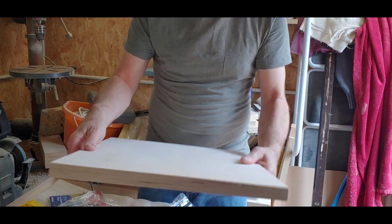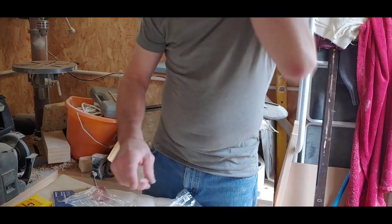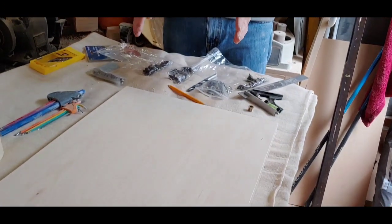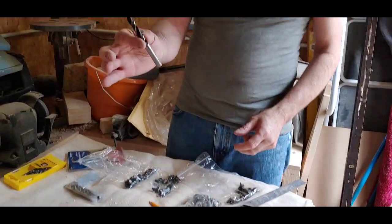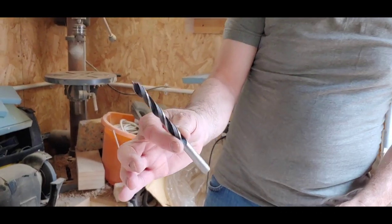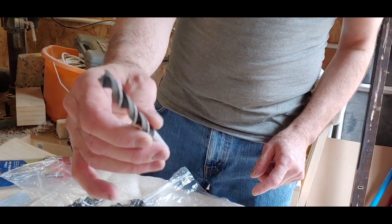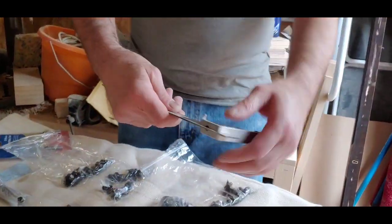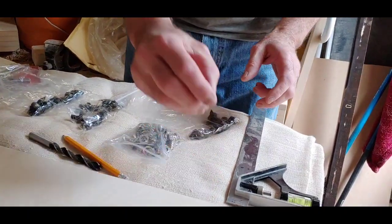This is a very nice top of the range birch ply, really good quality. I've already cut that to size. We need some drill bits, so in this instance we need a 10mm wood bit, a proper wood bit not a metal bit. We need a sliding bevel square and these are our inserts.